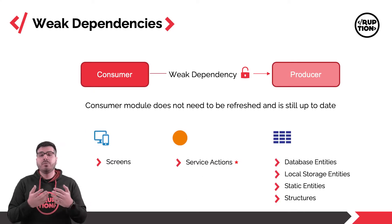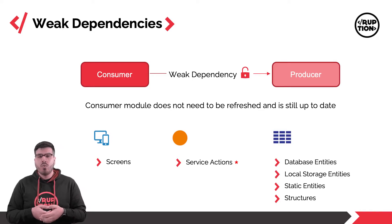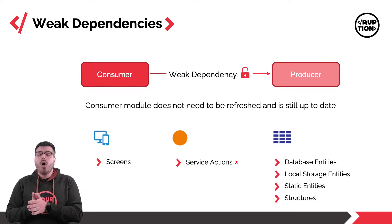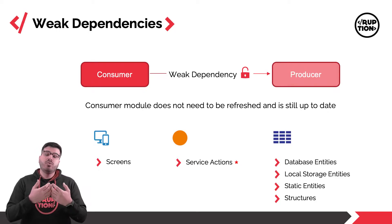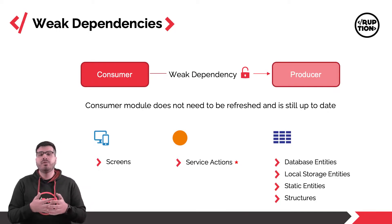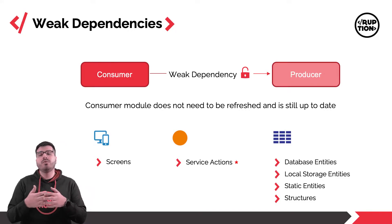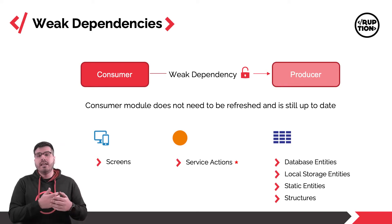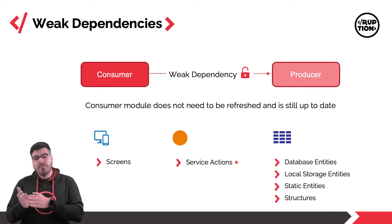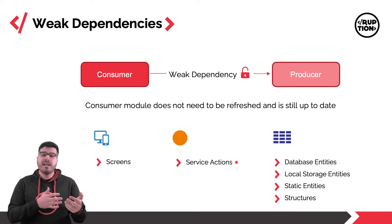Weak dependencies are a connection between modules, but in a loosely coupled way. We have two reactions depending on the element that was changed. All changes made to non-structural elements on the producer take immediate effect on the consumer. With weak dependencies, the consumer only needs to know the signature of the elements to be able to reuse them.